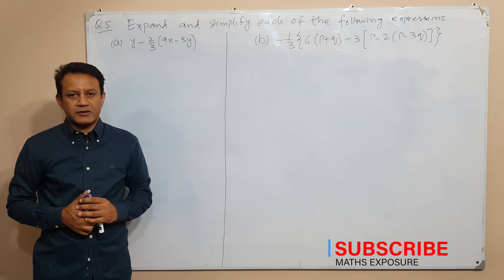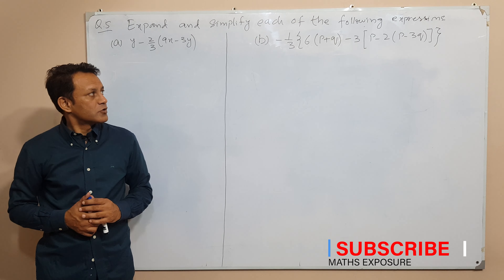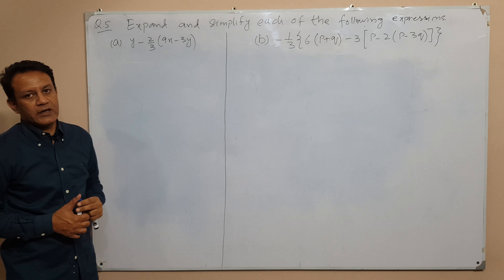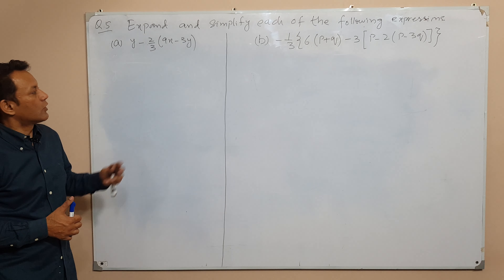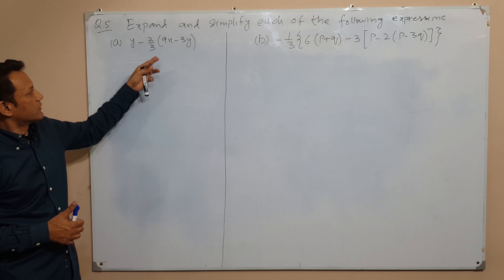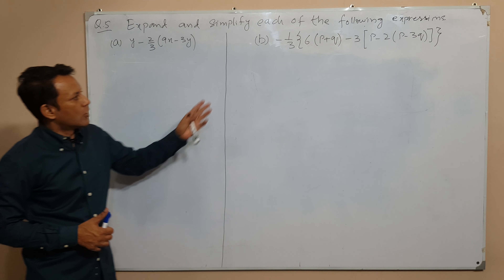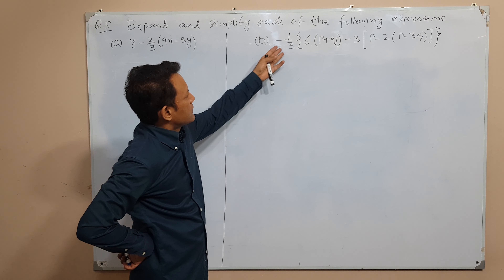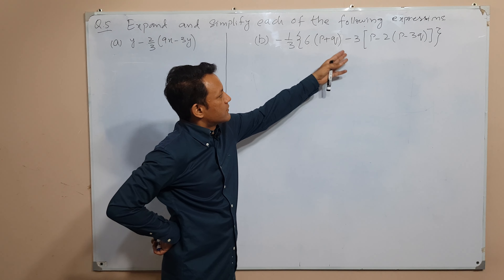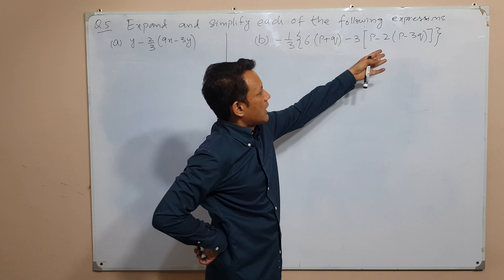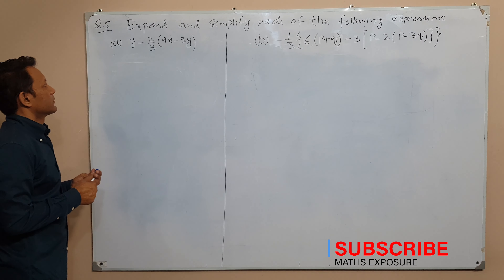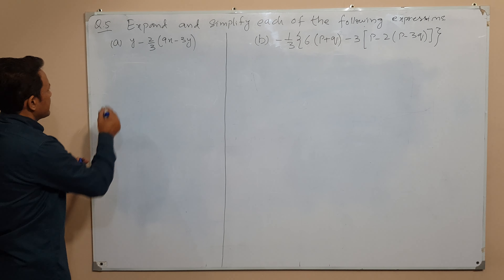Hello viewers, you are watching my channel MathsExposure. आज जो हम problem solve करने जा रहे हैं, उसमें हमें expand and simplify each of the following expressions करना है। दो expressions दी हुई हैं - पहला है y minus 2 upon 3 times 9x minus 3y, और part b है minus 1 upon 3 times 6 times p plus q minus 3 times p minus 2 times p minus 3q। तो पहले हम part a को solve करने जाते हैं।